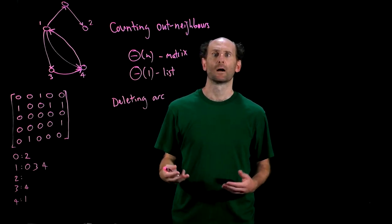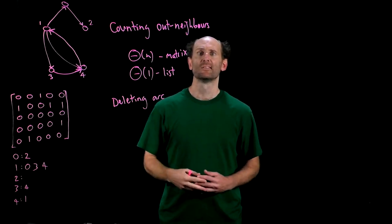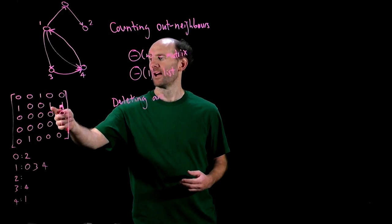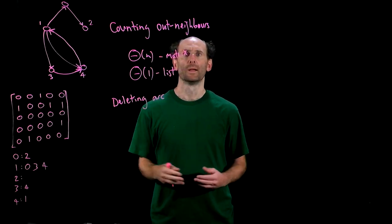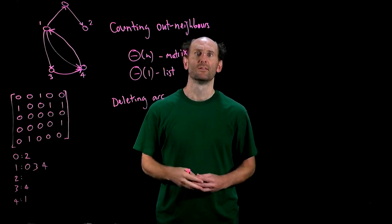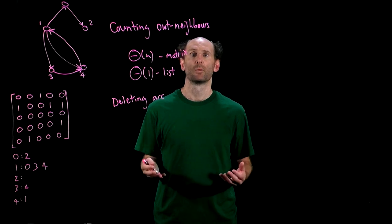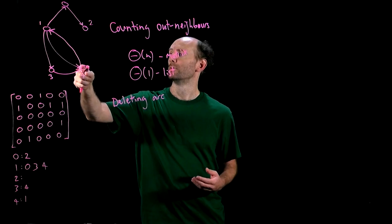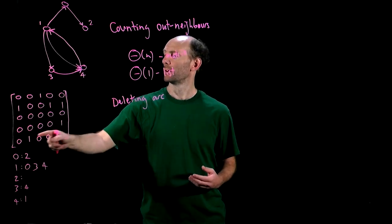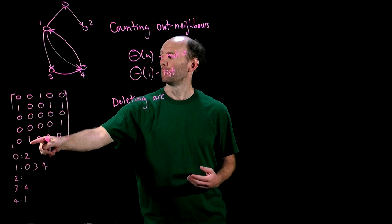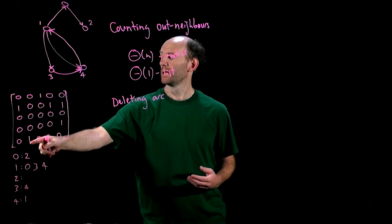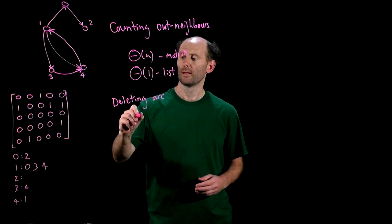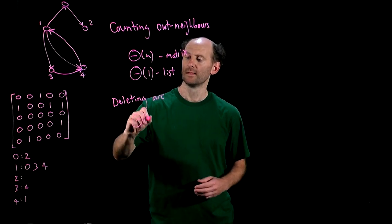Suppose we want to delete arc ij. In the adjacency matrix the operation is simple. We go to the ijth element we flip it from a 0 to a 1 the amount of work is clearly theta 1. So to delete any arc for example from 4 to 1 go to the 4th find the 4 1 element here and we'll turn that into a 0. That amount of work is clearly theta 1.